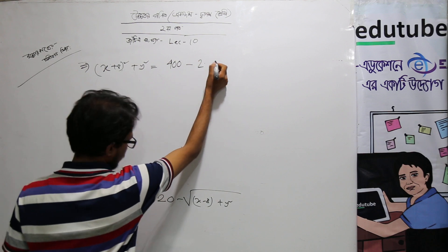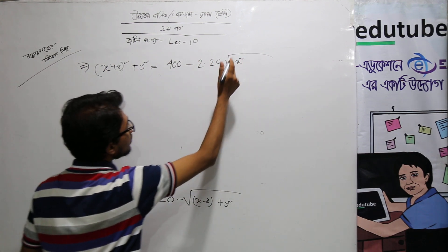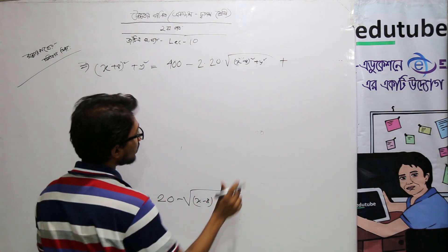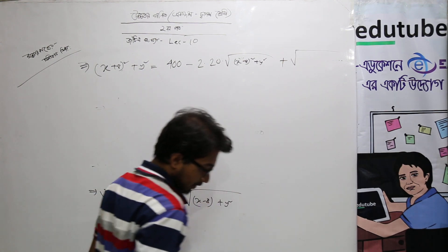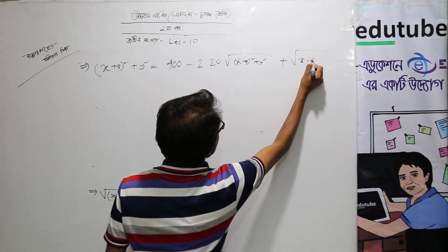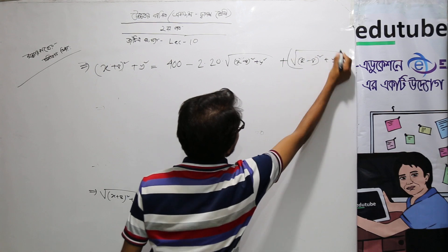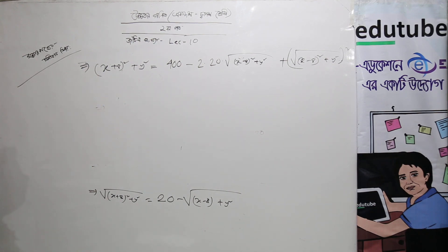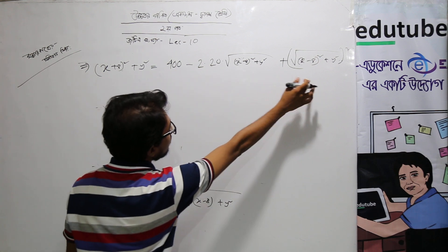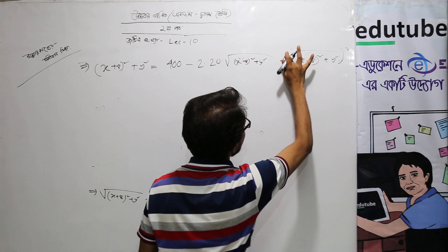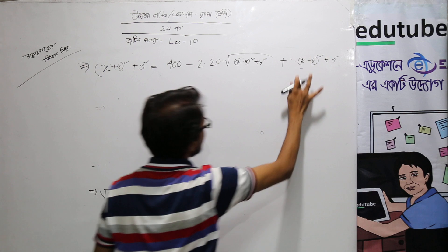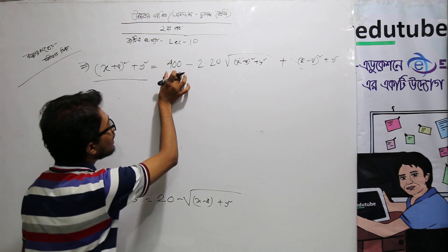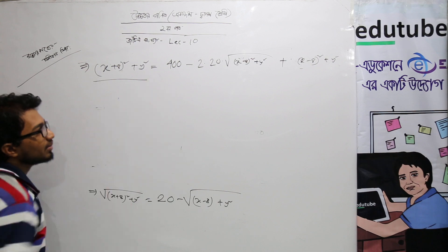So: root over (x - 8) whole square plus y square, plus root over (x - 8) whole square plus y square. After cancellation, x minus 8 plus y square simplifies, and 1 over x bar equals x minus 8 plus y square.